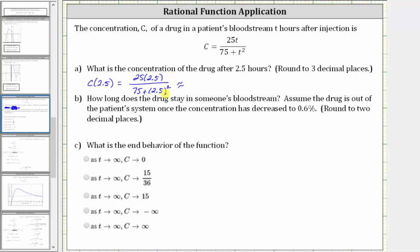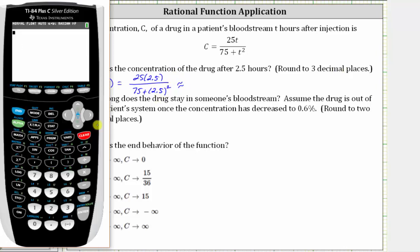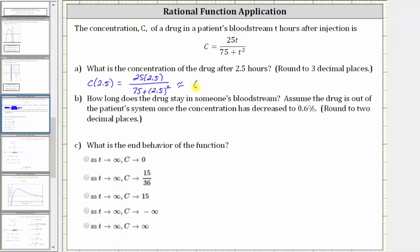Now let's go to the calculator and round this to three decimal places. We do need parentheses around the numerator and denominator. So we have open parenthesis 25 times 2.5 close parenthesis, divided by open parenthesis 75 plus 2.5 squared close parenthesis, and enter. There is a two in the fourth decimal place, so we round down to 0.769. The concentration is approximately 0.769%.